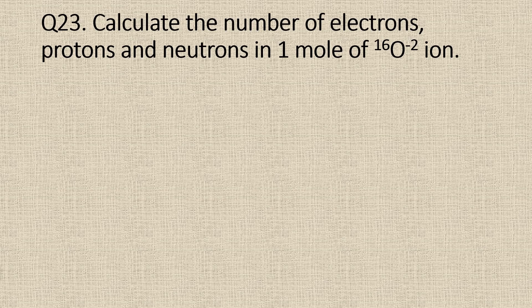Question 23: Calculate the number of electrons, protons and neutrons in one mole of O2 minus ion. In a neutral atom of oxygen, the number of electrons is equal to the number of protons, which is equal to 8, which is equal to its atomic number.